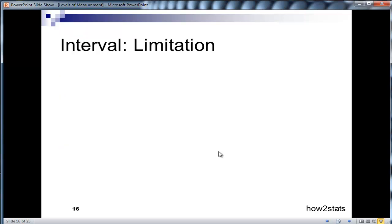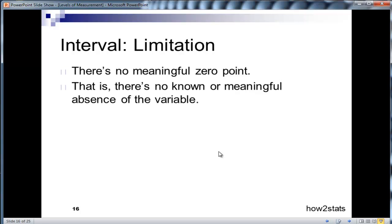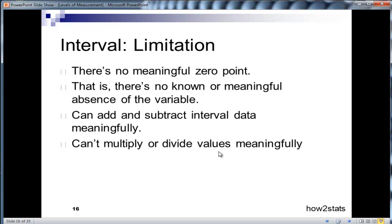Now what's a limitation associated with the interval scale? Well, there's no meaningful zero point associated with an interval scale. And that means that there's no known meaningful absence of the variable. And I'll show you examples to drive this home. You can add and subtract interval data meaningfully. This is a big difference between ordinal and interval data. But you can't multiply or divide values meaningfully with interval data. And again, I'll show you an example to make this clear.